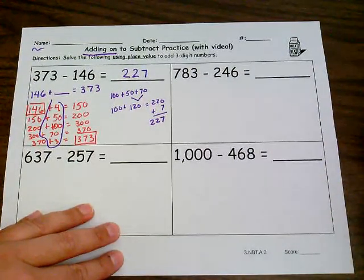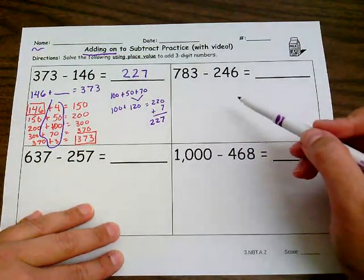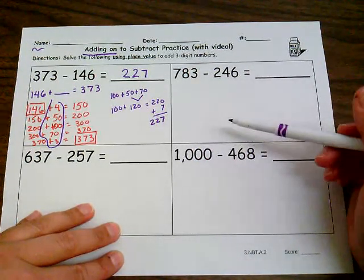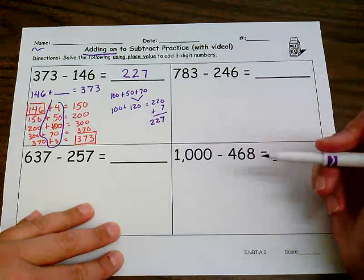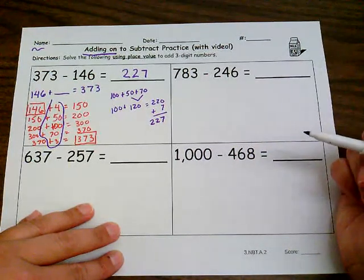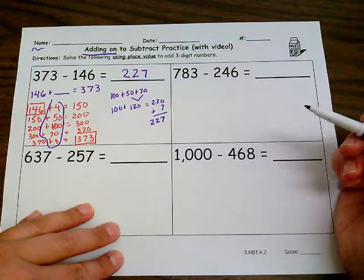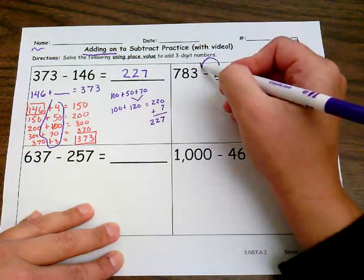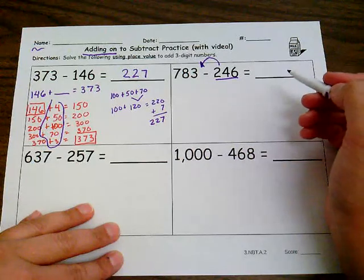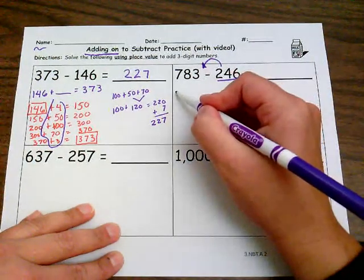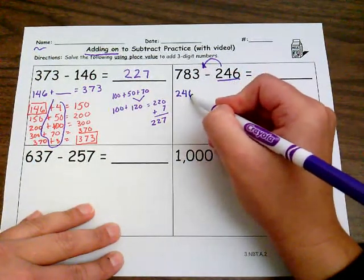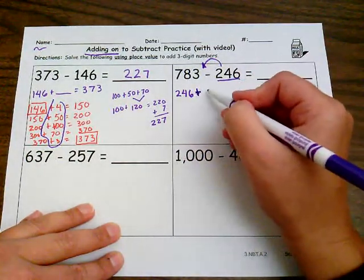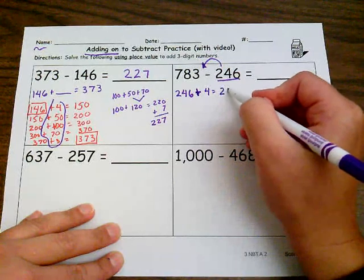Alright. So I want you to be brave and give this one a try on your own. So pause the video, see how far you can get. If you can only do a couple steps, that's okay. Press play and then let's see we can finish it the rest of the way. Alright. So I know I'm going to start at 246 and count up to 783.